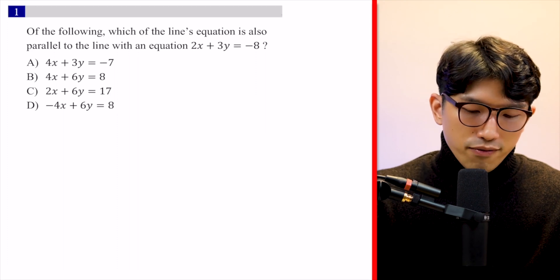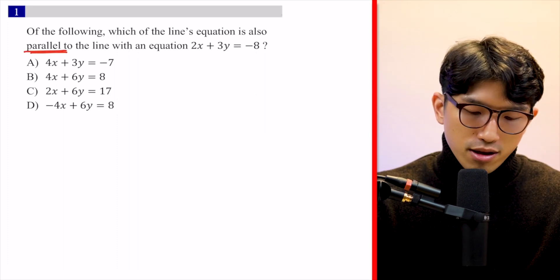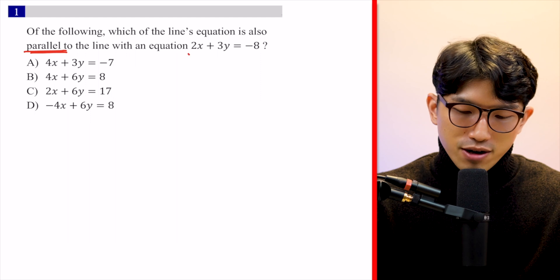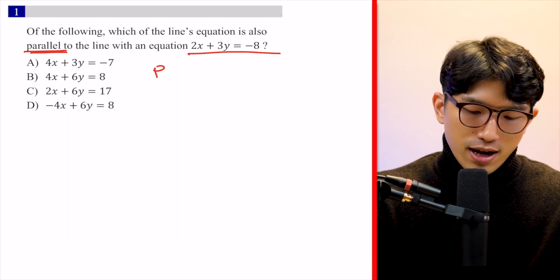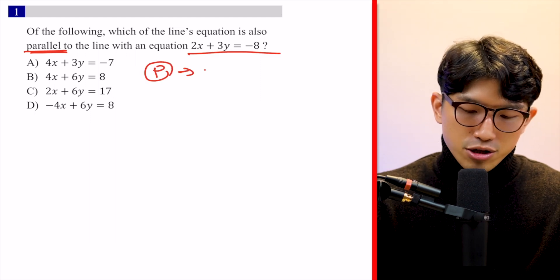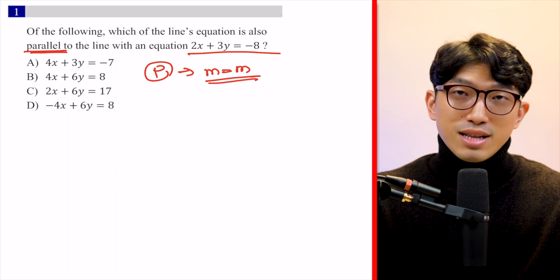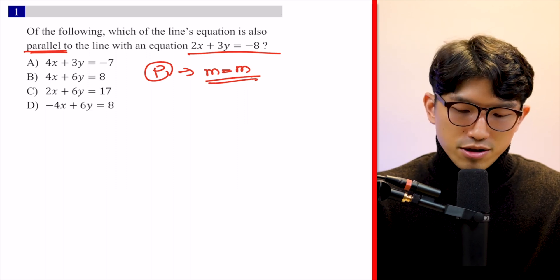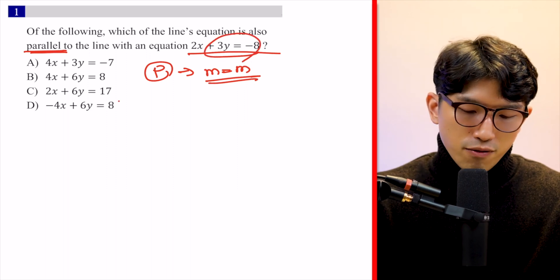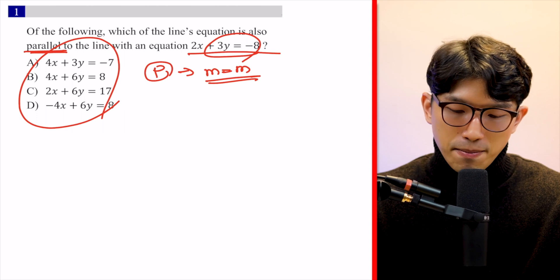Which of the following line equations is parallel to the line with the equation shown here? When it comes to parallel lines, we know that the slope just needs to be the same for two lines — that's what makes them parallel. So we just need to find the slope for this one, the slope for these four answer choices, and see which one matches up.